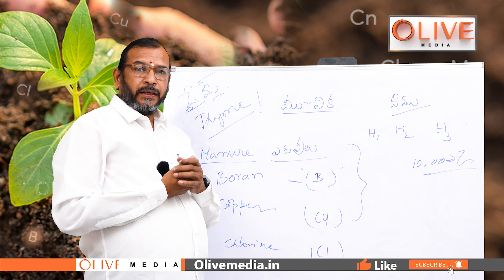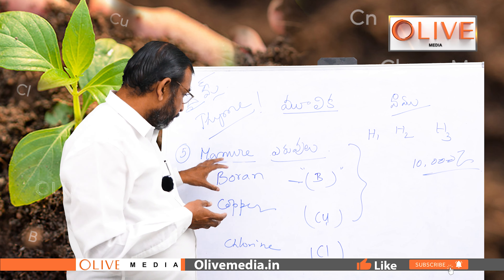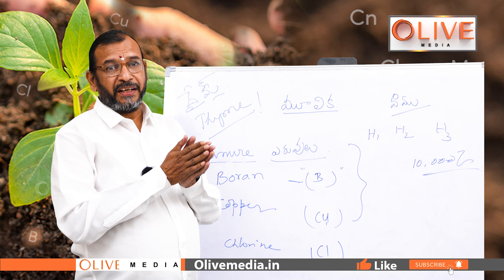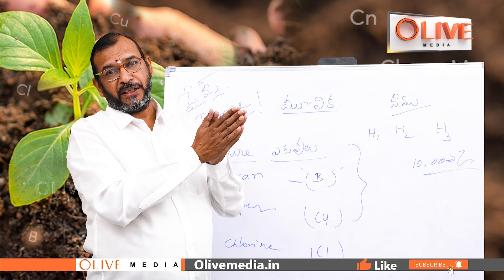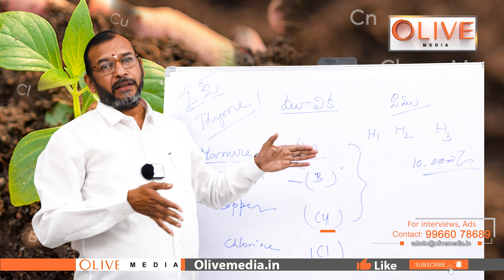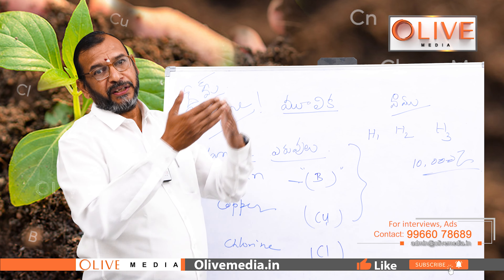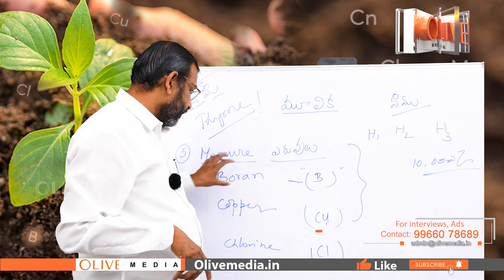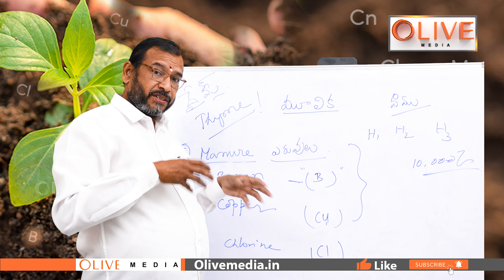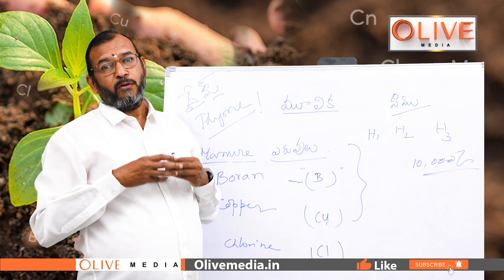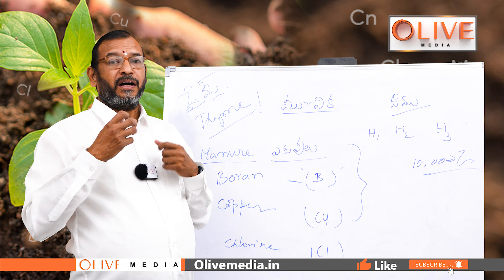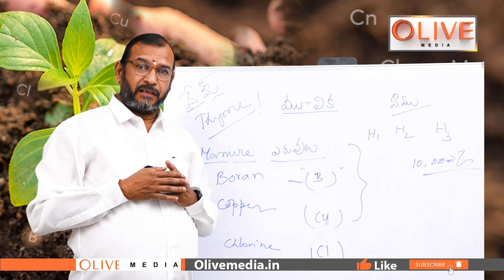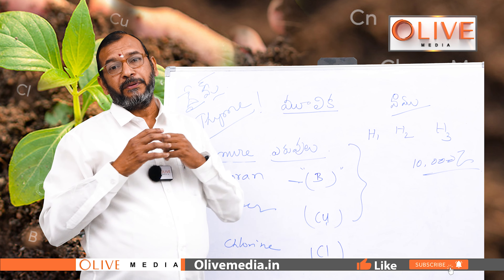Boron — there is a deficiency of Boron, which is basically the deficiency of Boron along with potassium and nitrogen. Boron is the same, and there is a deficiency of Boron in this case.